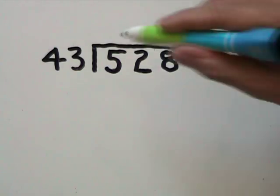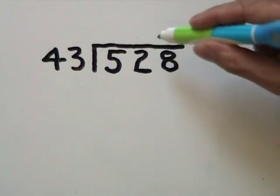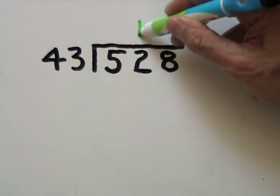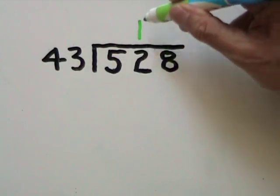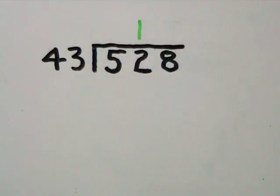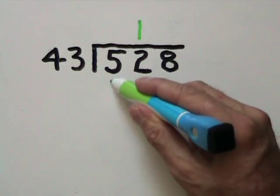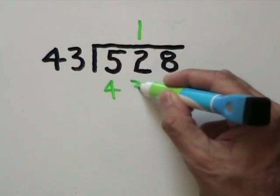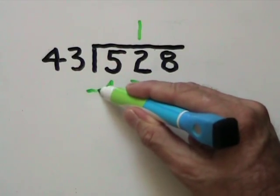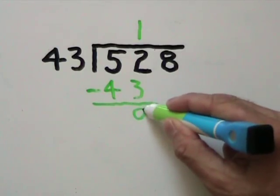Here, we see that 43 goes into 52 once without going over. We put our 1 directly over our 2, multiply 1 by 43 to get 43 and subtract it from 52. This is going to leave us with 9.